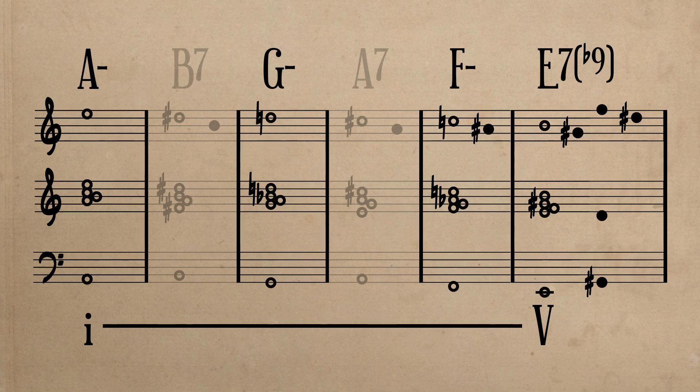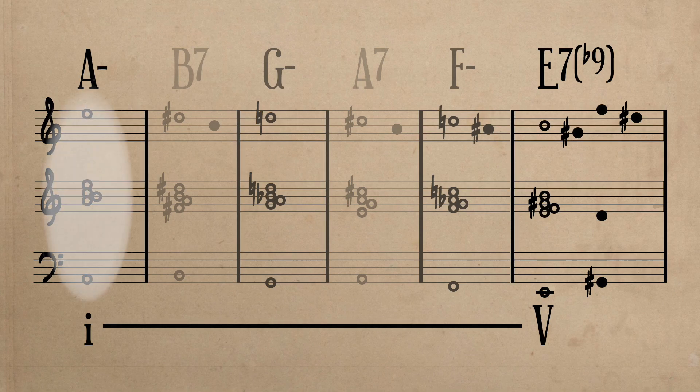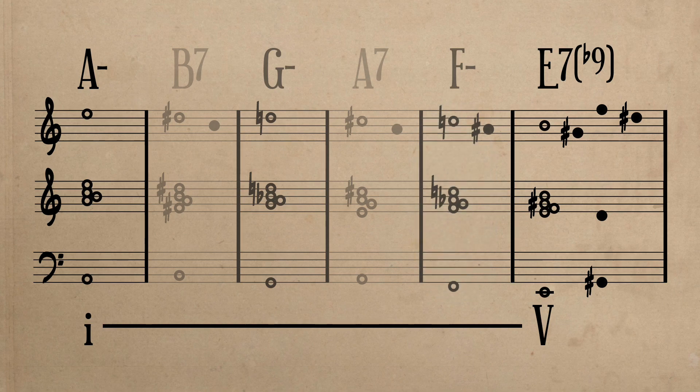And G minor to F minor. That said, despite the chords G minor and F minor being of a higher structural value, they are also prolongational chords, only they are prolonging the underlying progression of A minor to E7. As a result, the harmonic progression is simply 1 to 5.